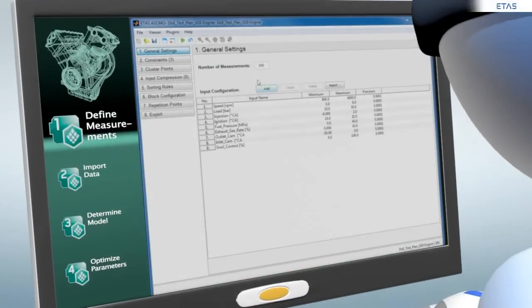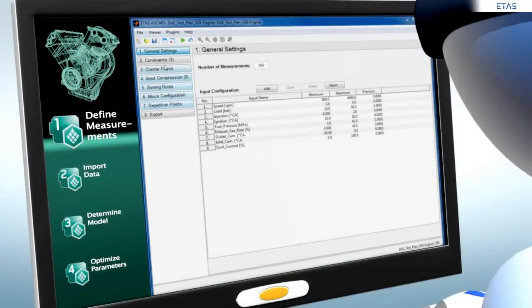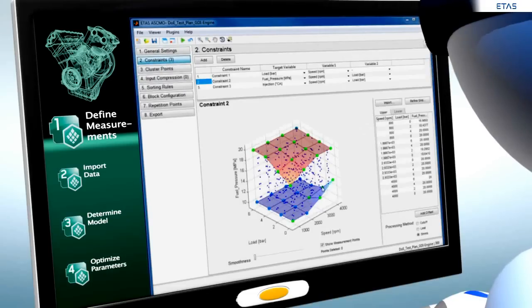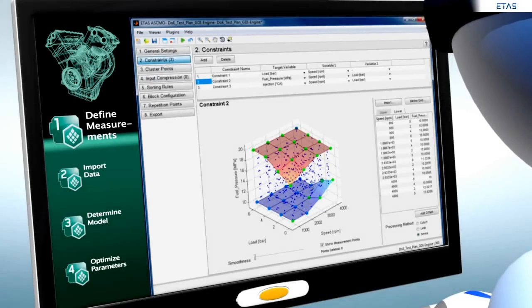First, ETAS ASCMO defines the appropriate measurements needed to parameterize the engine model. Typically, no more than a few hundred measurements are required.